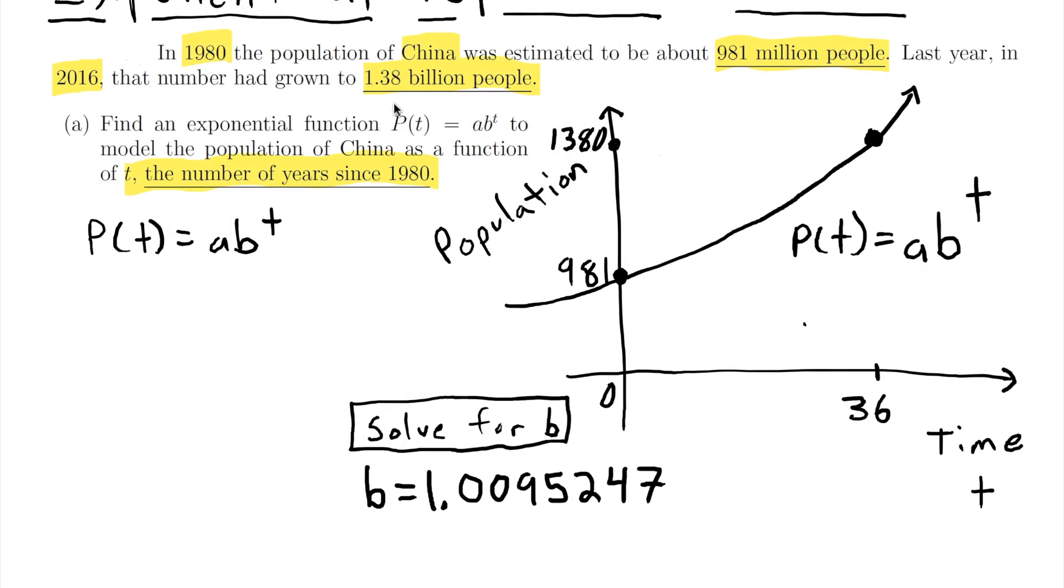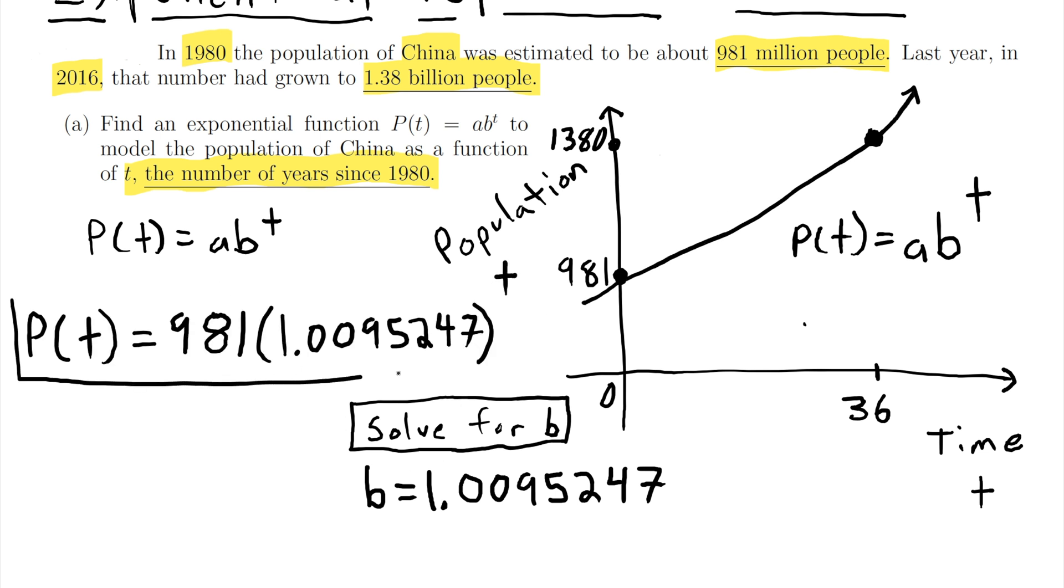So now that we have b we have actually finished with part a. We found an exponential function that models this population. So this is our exponential function that represents how the population of China is growing as a function of t, the number of years since 1980.